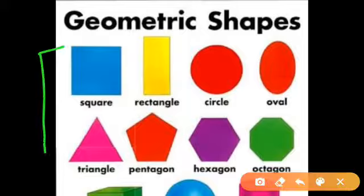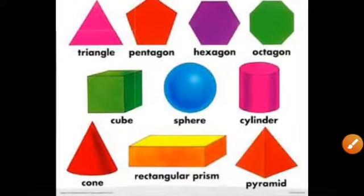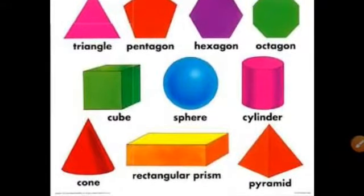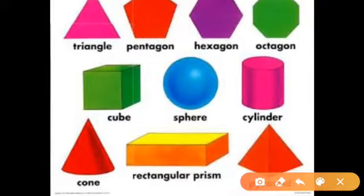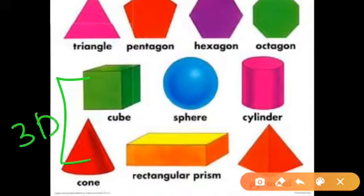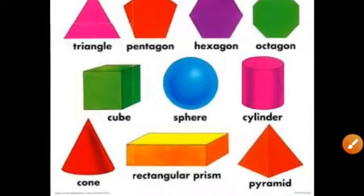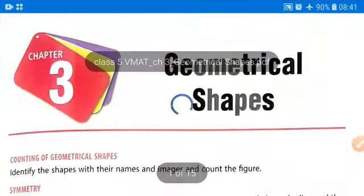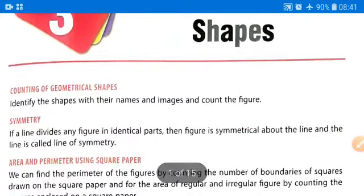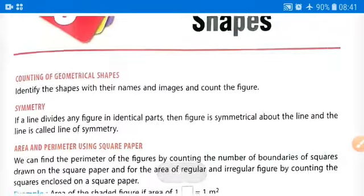These are 2D shapes — two-dimensional shapes. Moving further, we have cube, sphere, cylinder, cone, rectangular prism, and pyramid. All of these are 3D shapes. So these are some examples of geometrical shapes.